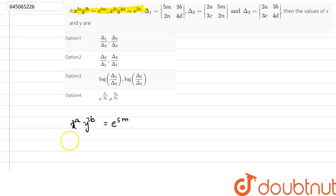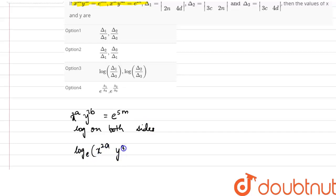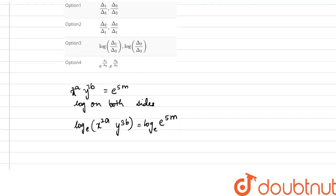If we take logarithm on both sides, we get: log base e of (x^(2a) · y^(3b)) = log base e of e^(5m). Now let us simplify this equation.